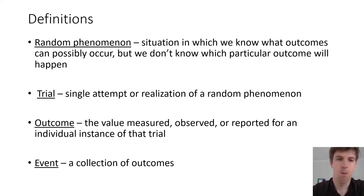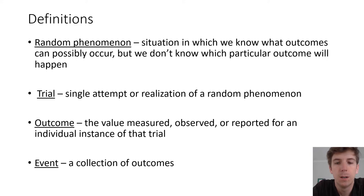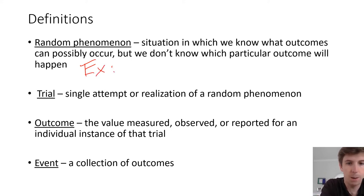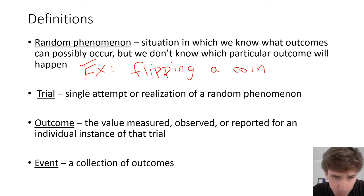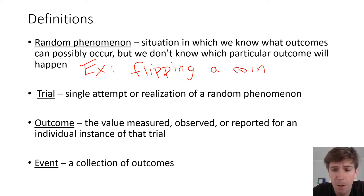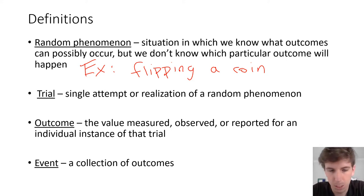First up, we have a few definitions. The first one is called a random phenomenon — a situation in which we know what outcomes can possibly occur, but we don't know which particular outcome will happen. The greatest example is flipping a coin, one of the most common and easiest to model. We know it's either heads or tails, but we don't know which outcome will happen every time. The randomness is actually quite valuable to us.